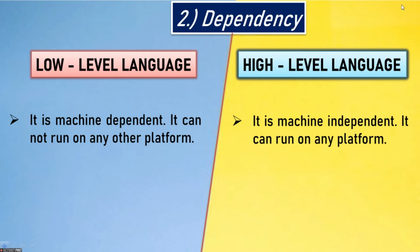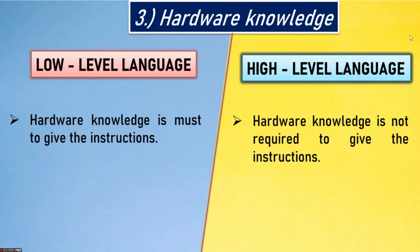Second point: dependency. Low level language is machine dependent — it cannot run on any other platform, meaning it can only run on the computer or machine on which the program was written. High level language is machine independent — it can run on any platform.